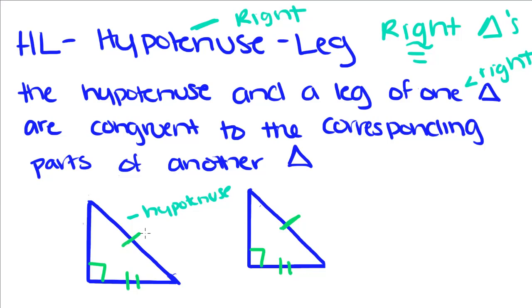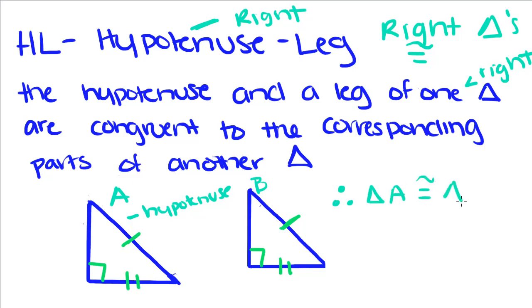We know that the hypotenuse of this triangle is congruent to the hypotenuse of this triangle, and that this leg is congruent to the corresponding leg of this triangle. A leg is any side of a right triangle that is not the hypotenuse. We know both triangles have right angles, so triangle A is congruent to triangle B by HL.